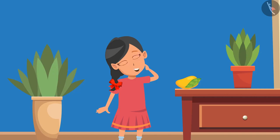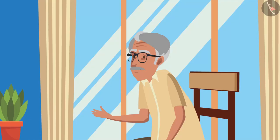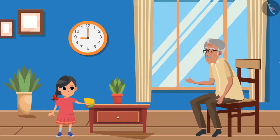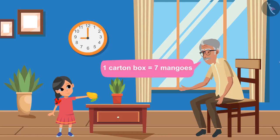Gudi asks her grandpa a question: if they sell their mangoes in the market, how much money will they get? Grandpa explains that mangoes are sold by carton boxes or by kilograms. Gudi mentions they have 7 mangoes in a carton box and have packed mangoes in 10 carton boxes.